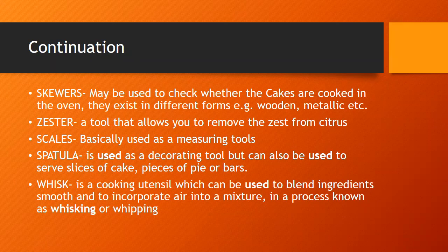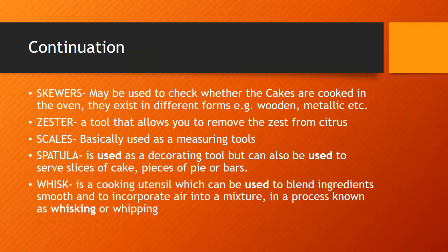A rolling pin is used to roll out pastry products. A skewer is used to check whether the cake is cooked in the oven. Skewers exist in both wooden and metallic forms — you press the edges of the cake using a skewer to determine whether the cake is cooked or not.